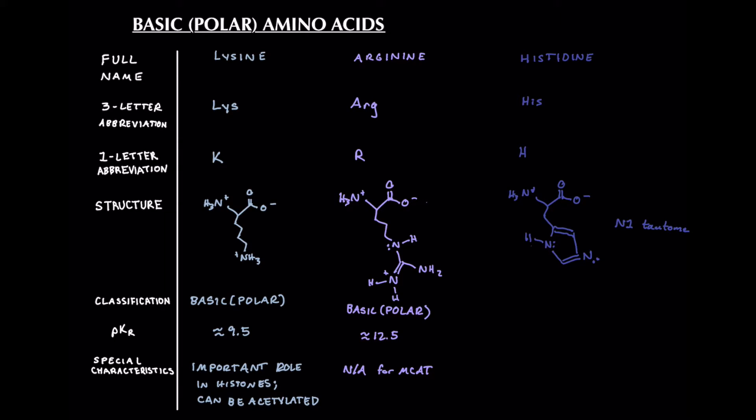Now the classification, of course, of histidine is going to be basic or polar, because we're focusing on those today. So interestingly, though, this guy will not be positively charged at physiological pH. And the reason for that is that its pKa is approximately 6, and physiological pH is 7.4. So even though it is a basic or polar amino acid, it will not be positively charged, as opposed to lysine and arginine, which definitely will carry that positive charge. So that is something definitely to keep in mind, is that histidine is going to be neutral.